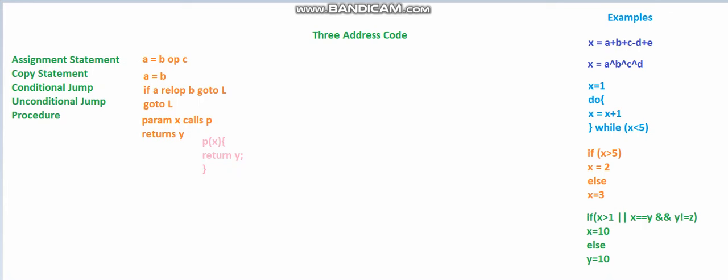In this video lecture, I will talk about three address code. When I talk about three address code statements, I can talk about assignment statement, copy statement, conditional jump, unconditional jump, and procedure call.